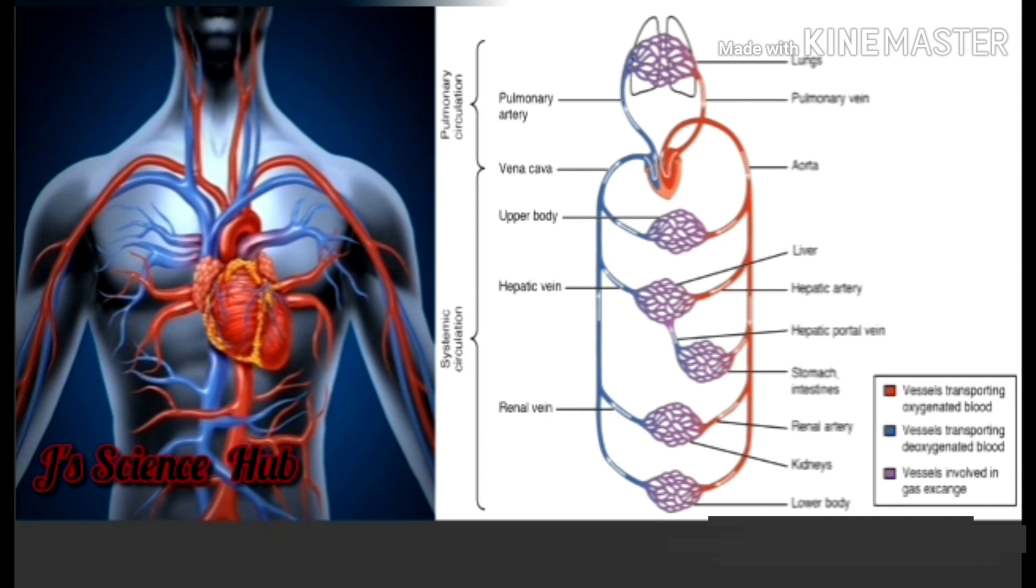Getting the deoxygenated blood from the heart for purification to the lungs, then bringing back the oxygenated blood to the heart and circulating it throughout the body. Then from the cells, collecting the deoxygenated blood to the heart and then transferring it back to the lungs for purification.